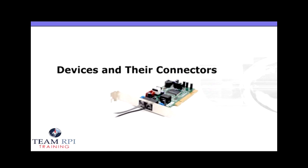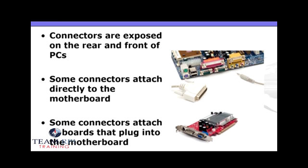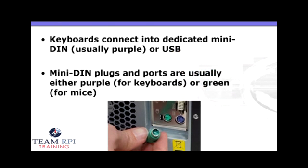Now that you understand the different types of connectors, let's figure out which devices use them. The connectors themselves are exposed on the rear, or possibly the front of your PC. Some connectors attach directly to your motherboard, while other connectors attach to boards that plug into expansion slots on the motherboard. So do you remember your color codings? Keyboards, usually purple, are going to use a dedicated mini DIN or possibly a USB. Mini DIN plugs and ports are color coded so you can quickly identify what goes where — purple for keyboards, green for mice.